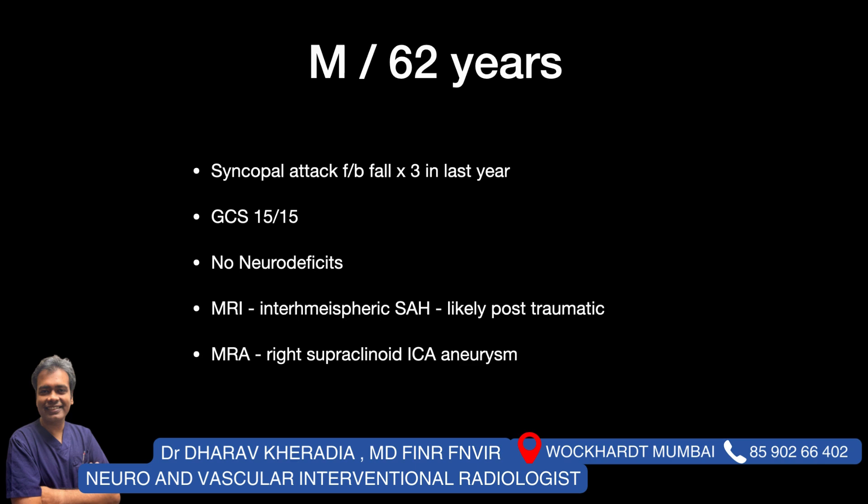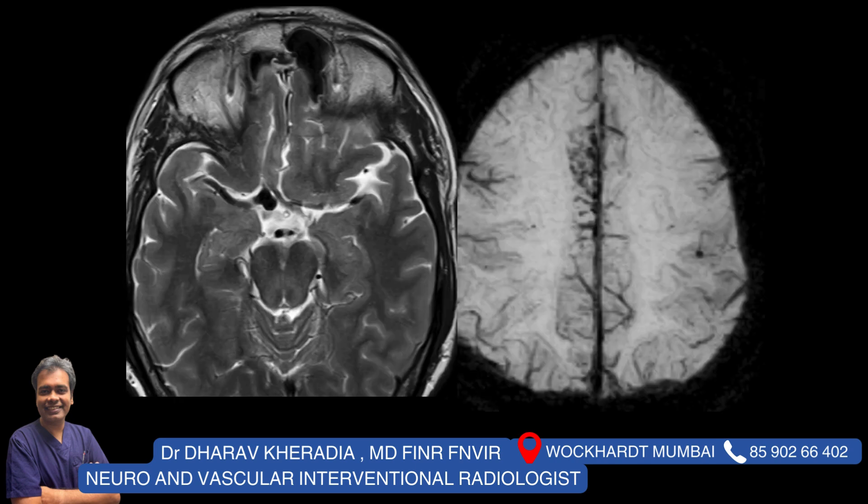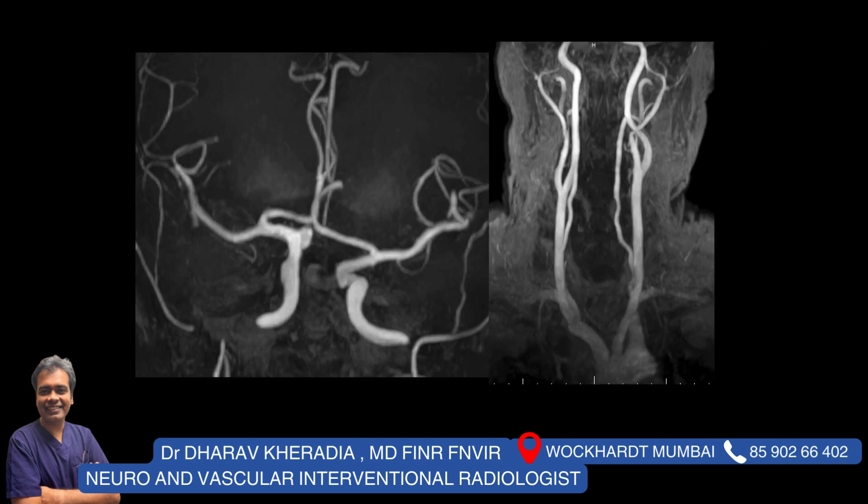Let's look at this case study. A 62-year-old gentleman presented to us with unconsciousness episodes — there were three episodes in the last year. On examination he was all right. MRI was done which showed interhemispheric subarachnoid hemorrhage, and MRI angiography was done to see any blood vessel abnormality, which revealed a right supraclinoid ICA aneurysm. This is the MRI picture — the aneurysm is here and this is the subarachnoid hemorrhage.